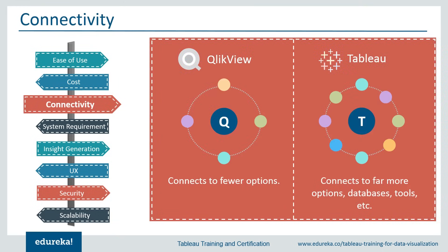Regarding connectivity, QlikView integrates with a broad range of data sources like Amazon VectorWise, Redshift, Cloudera Hadoop, Impala, CSV, and Datastax. It can connect with R using API integration and also connects to big data. Tableau can integrate with an even broader range of data sources including spreadsheets, CSV, SQL databases, Salesforce, Cloudera Hadoop, Firebird, Google Analytics, Oracle, Pivotal Greenplum, and Windows Azure Marketplace. It also connects with R to power analytical capabilities and supports big data sources.